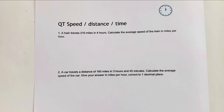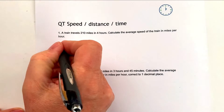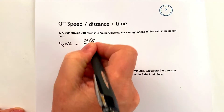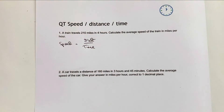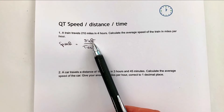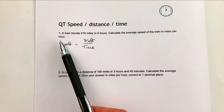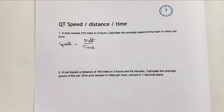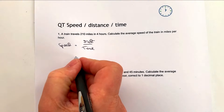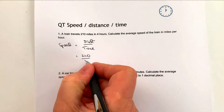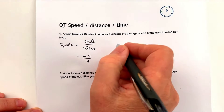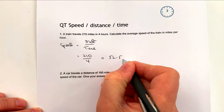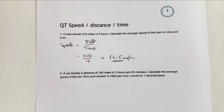Question one: a train travels 210 miles in four hours - calculate the average speed in miles per hour. I would always write speed equals distance divided by time. The reason that's true is because the unit of speed is miles per hour - miles is distance, per means over, hour is time. So distance is 210, time is four hours: 210 divided by 4 gives a speed of 52.5 miles per hour.